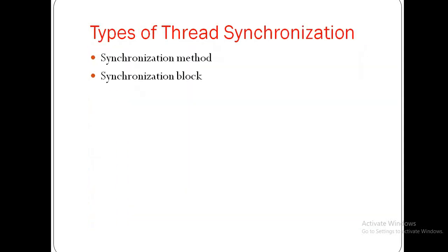Next are the types of thread synchronization. We can achieve synchronization with the help of two things: a synchronized method and a synchronized block.